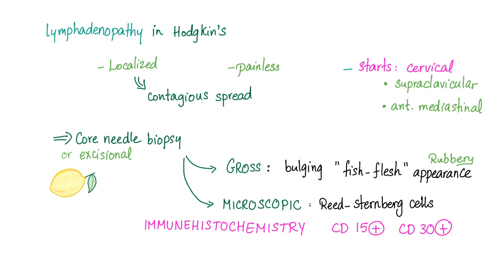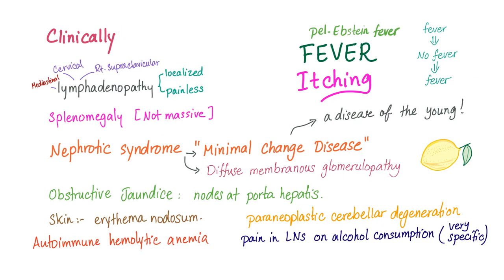Microscopically, the Reed-Sternberg cell is CD15-positive and CD30-positive. Clinically, there is lymphadenopathy and splenomegaly. Hodgkin's can be associated with nephrotic syndrome, probably minimal change disease. There is fever and itching. Hodgkin's is a disease of the young. There could be obstructive jaundice because lymph nodes at the porta hepatis can cause obstruction. Skin involvement can lead to erythema nodosum.